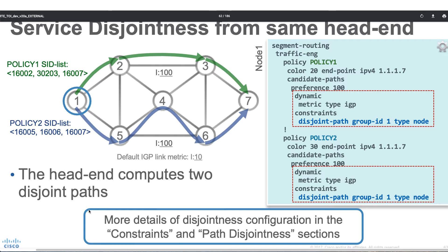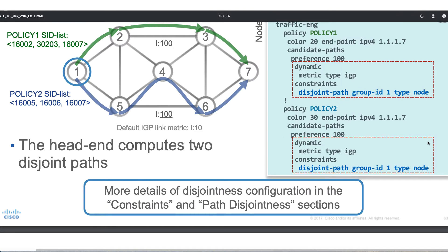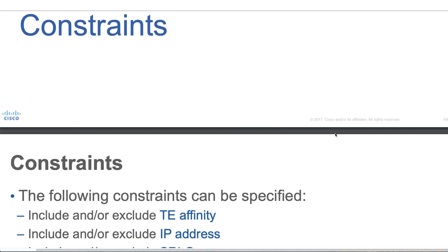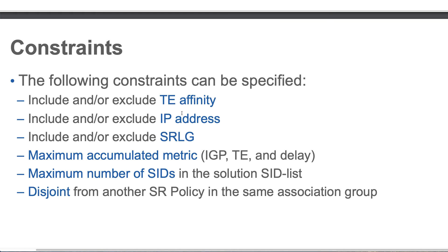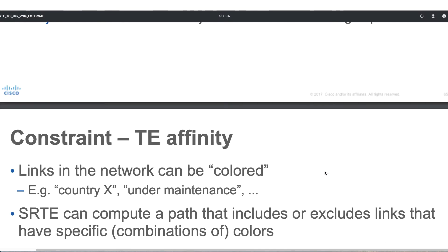Node one will find two different paths where the same node is not being utilized for both policies. This constraint is simply called a disjoint path. Now let's quickly look at some of the constraints again. We can configure TE affinity, IP address, SRLGs, maximum accumulated metric for IGP, TE, and delay, maximum number of SIDs in a solution, as well as the disjoint path we just saw.